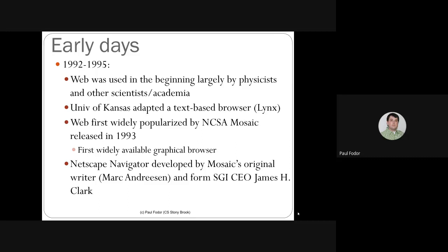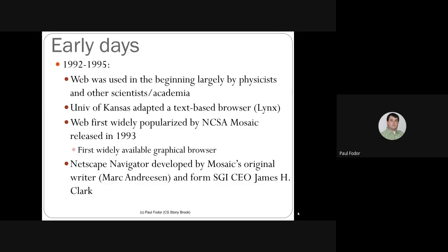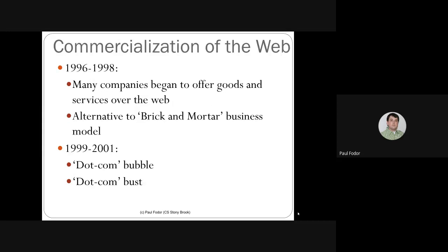The first widely popular graphical browser was Mosaic, released in 1993. Netscape Navigator was developed by Mosaic's original author and SGI CEO James Clark. Between 1996 and 1998 came the boom of the web — suddenly everybody realized this was a huge commercial venture. Many companies started offering goods and services over the web as an alternative to physical brick-and-mortar businesses, with the idea that you could sell everything including services without owning a physical location.